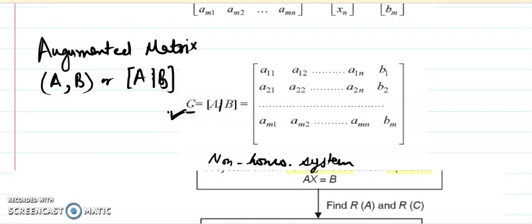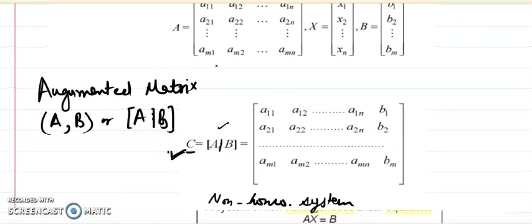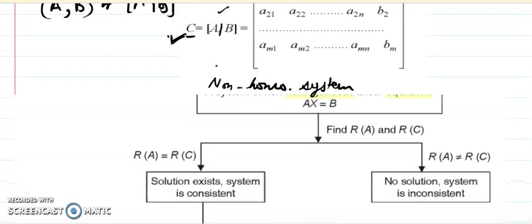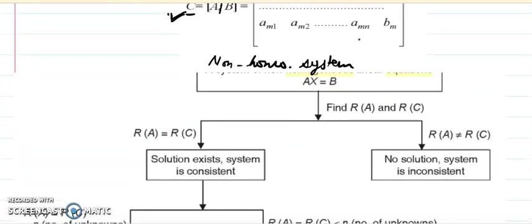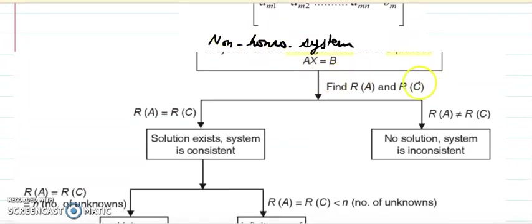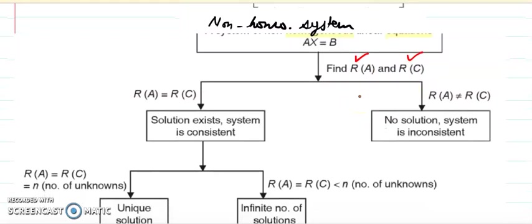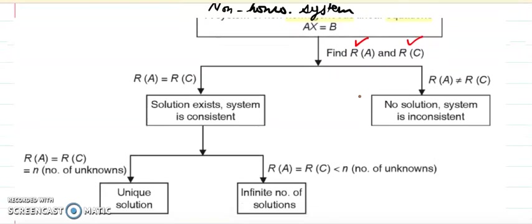I have given a notation to the augmented matrix in my discussion. The first step is to write the system and find the rank of two matrices: one matrix is the coefficient matrix A without constants, and another matrix is the augmented matrix C with the extra constant column. We find the rank of A without constants and the rank of C with constants, and then we examine the various situations we can face.